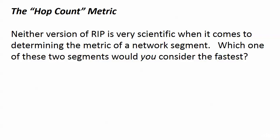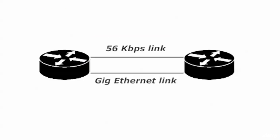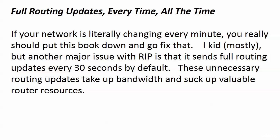Let's talk about that hop count for a second. Neither version of RIP is very scientific when it comes to determining the metric of a network segment, because hop count is the only thing it understands. You and I could look at a gigabit Ethernet link and a 56k link and say the gig link is faster — but RIP considers these two links to be the same speed. It's one hop; it's the same metric to RIP. RIP can't differentiate.